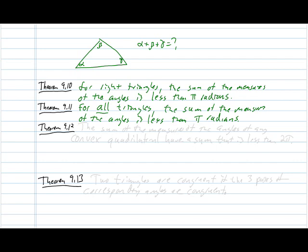And that difference is actually called the defect of the triangle. We're not going to get to it in the next section, but you actually end up defining the area of a triangle in terms of this defect, which is a really fascinating thing. And theorem 9.12, which you will also be proving in proof set eight, we see that the sum of the measures of the angles of any convex, and this is important, convex, quadrilateral, sum to less than two π.